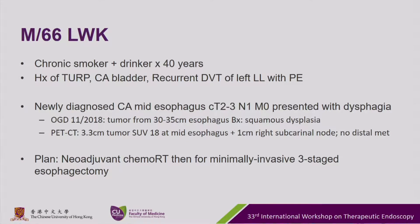This is a 66-year-old male. He's a chronic smoker and drinker for 40 years, with a history of TRP, CA bladder, and recurrent DVT of the left lower limb with pulmonary embolism. He has a newly diagnosed CA mid-esophagus, clinically staged T2-3, N1, and M0.